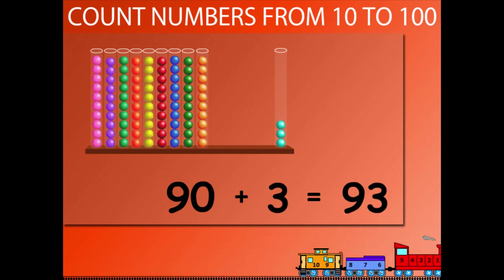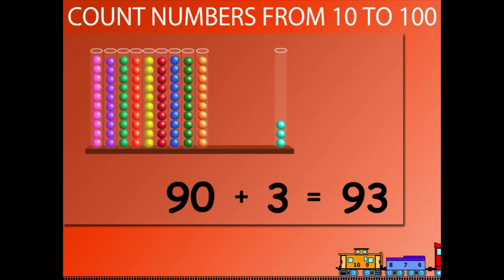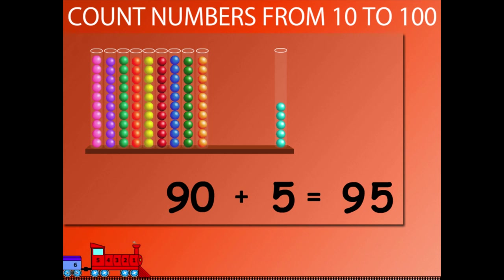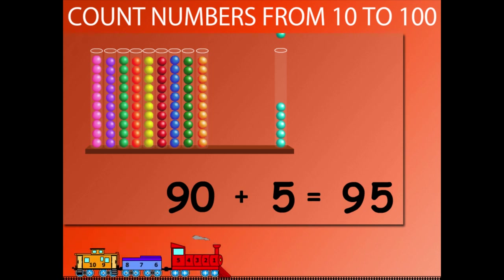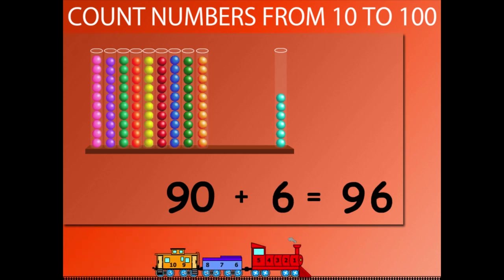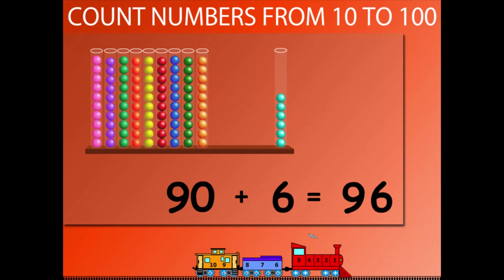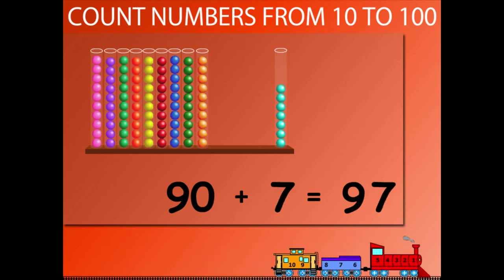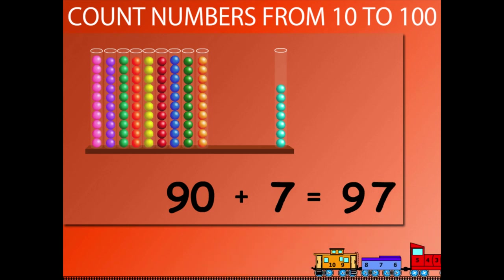90 plus 3 is equal to 93. 90 plus 4 is equal to 94. 90 plus 5 is equal to 95. 90 plus 6 is equal to 96. 90 plus 7 is equal to 97.